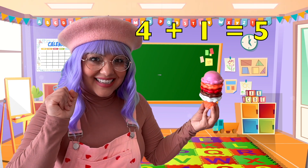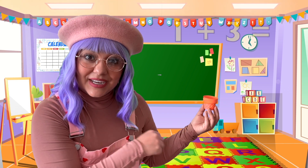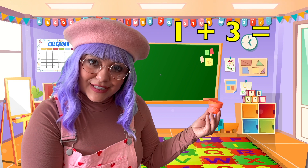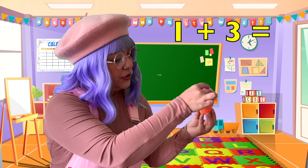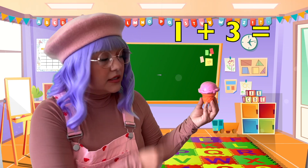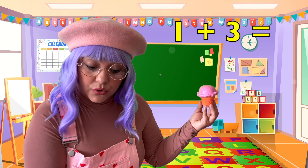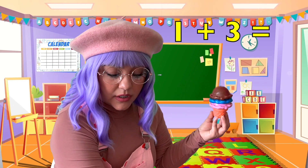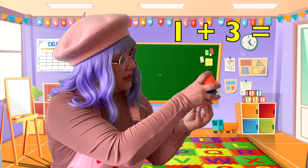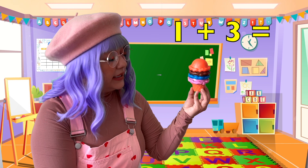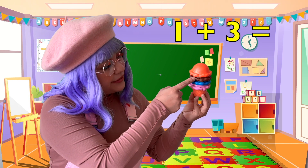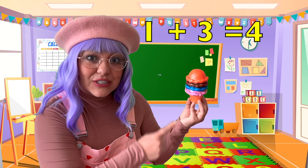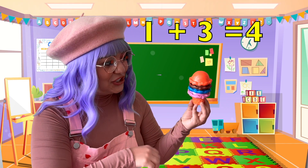Great job adding. Now let's do number 3: 1 plus 3. What's 1 plus 3? Let's add 1 scoop, and now let's add 3 more scoops — 1, 2, 3. Now let's count them: 1, 2, 3, 4. 1 plus 3 equals 4. 4 scoops. Great job.